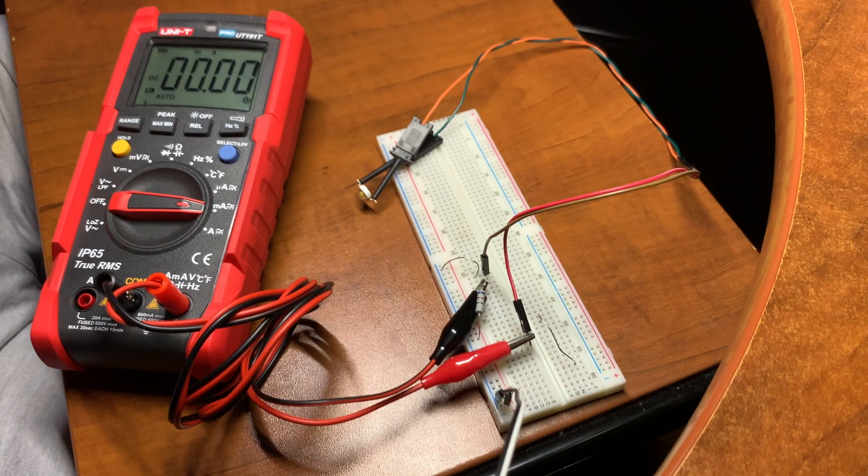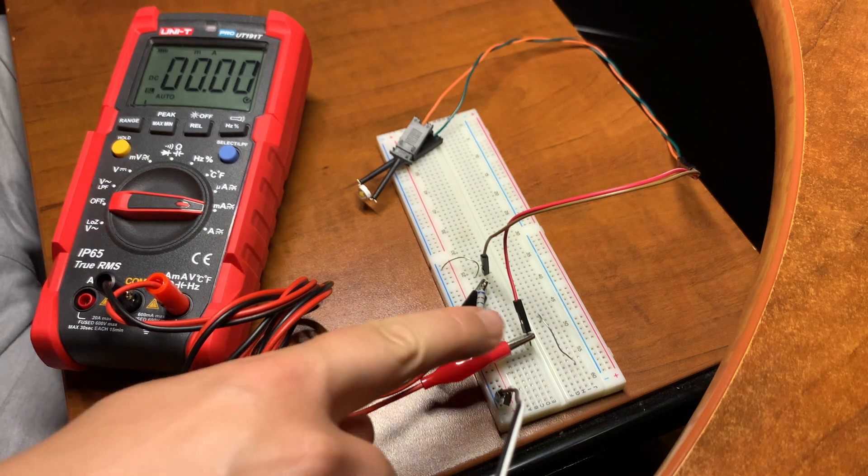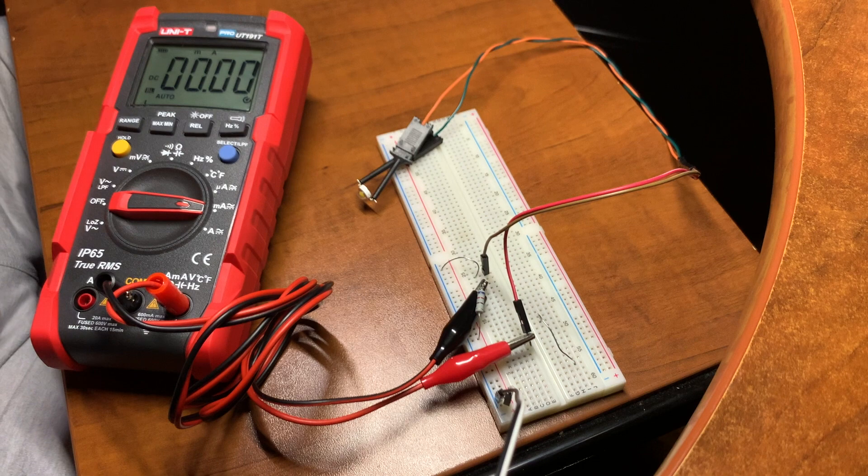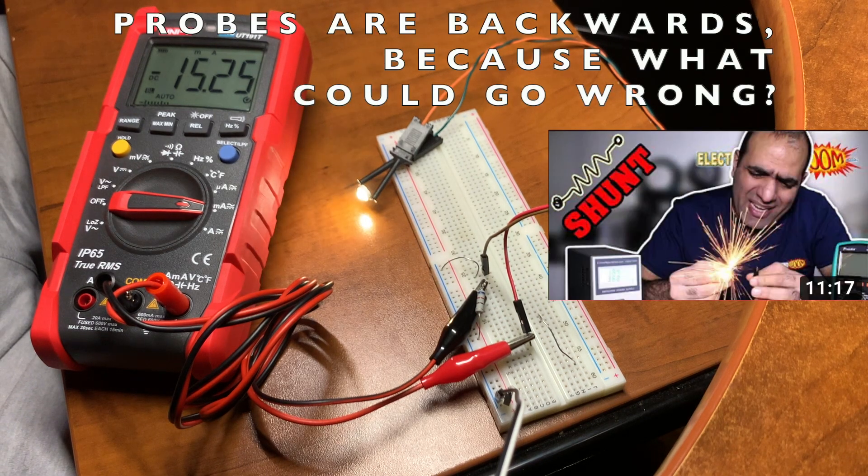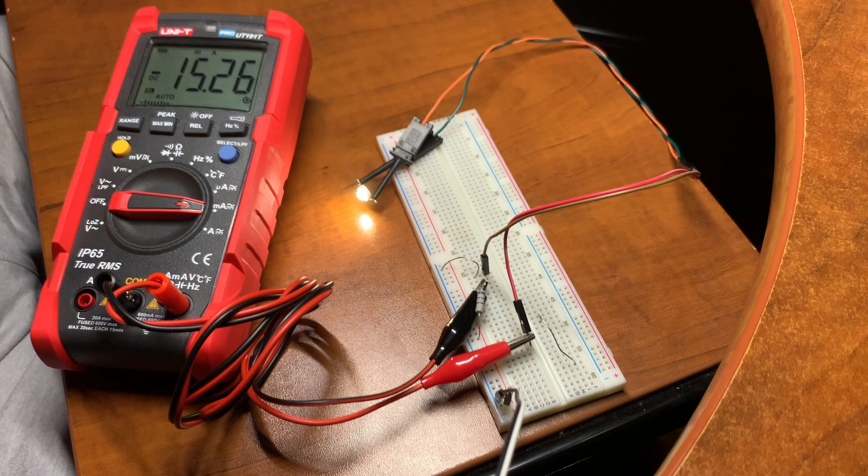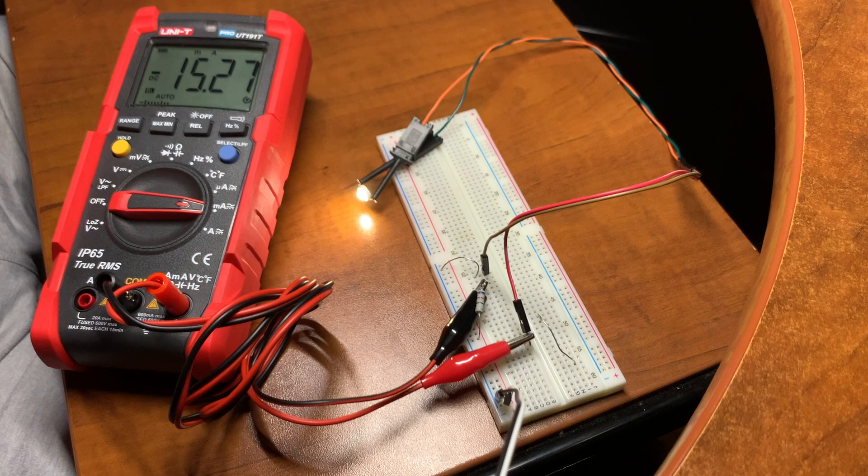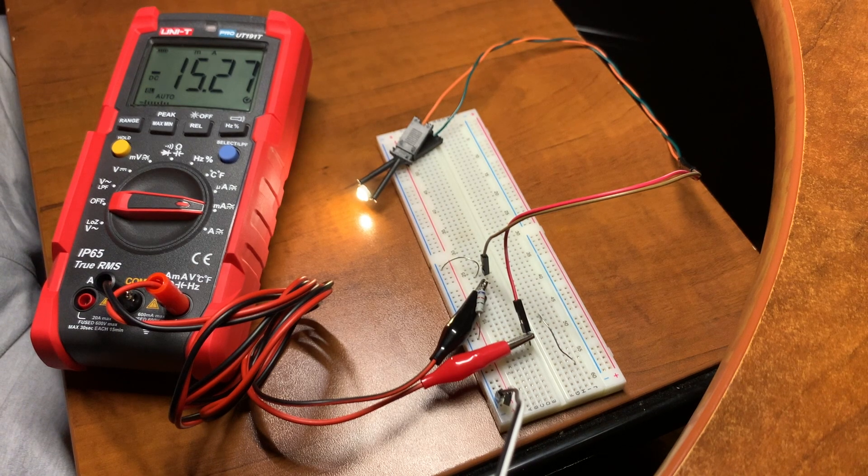To show that the calculation was accurate, I connected the multimeter that can measure amps in series with the circuit and we'll see how much current is going in. So we're measuring 15.27 milliamps, which is pretty accurate. That's an error of less than one percent.